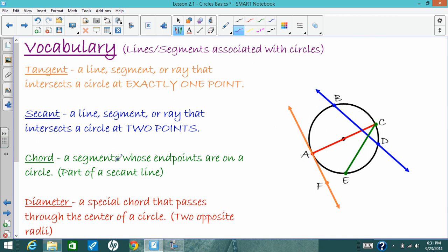A chord, which is actually part of a secant line, so if we extended this green chord this way and this way, it would be a secant line. So this is just a segment that's part of a secant. It has endpoints that are on the circle, and the segment goes inside the circle. That's a chord.